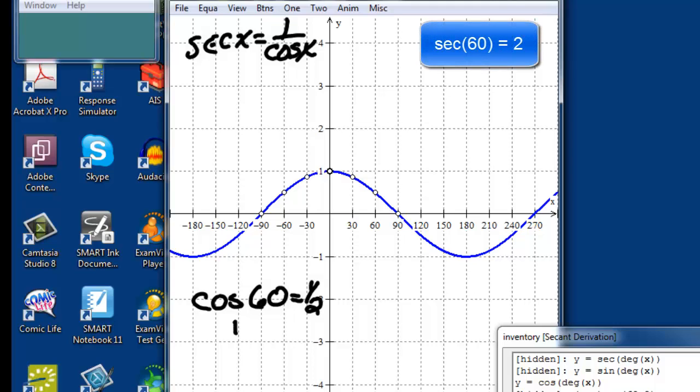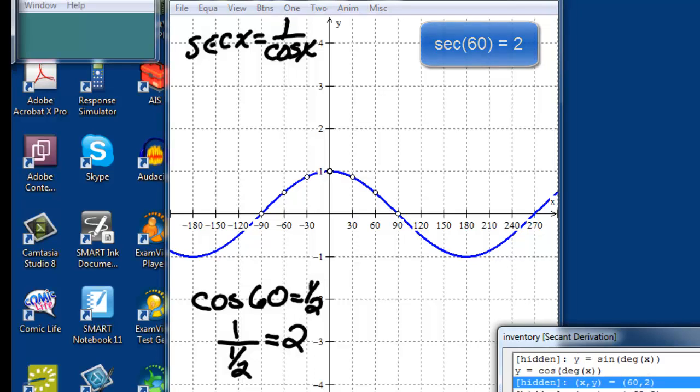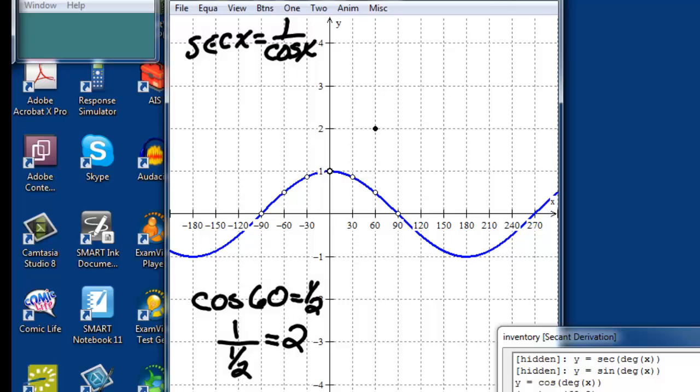So at 60 degrees, we should get a value of 2 for the secant. So, 60 comma 2. At negative 60, we should also get a value of 2.